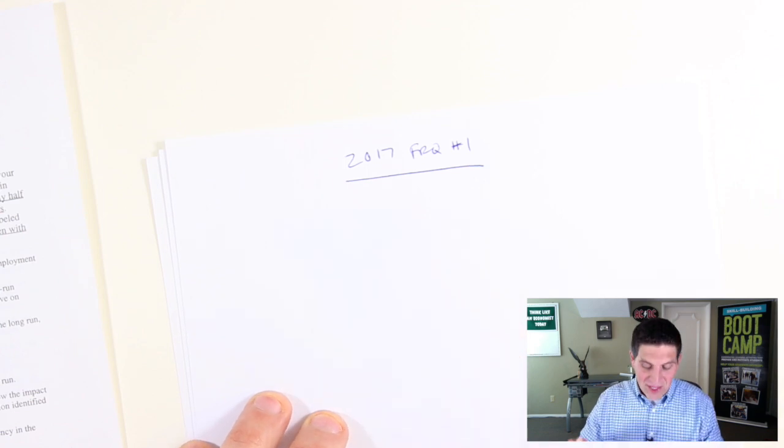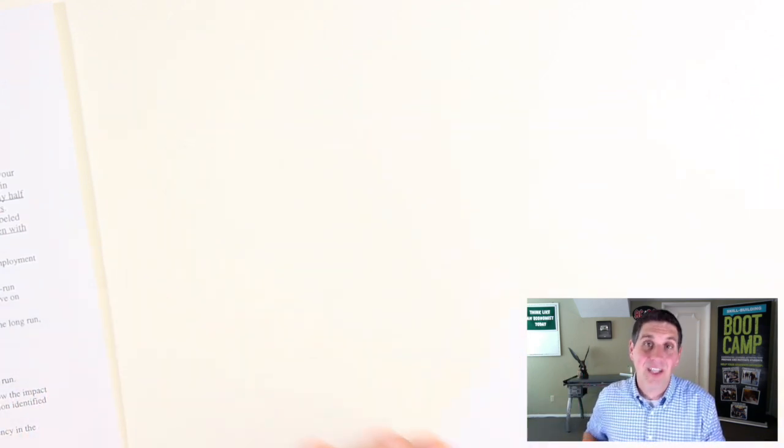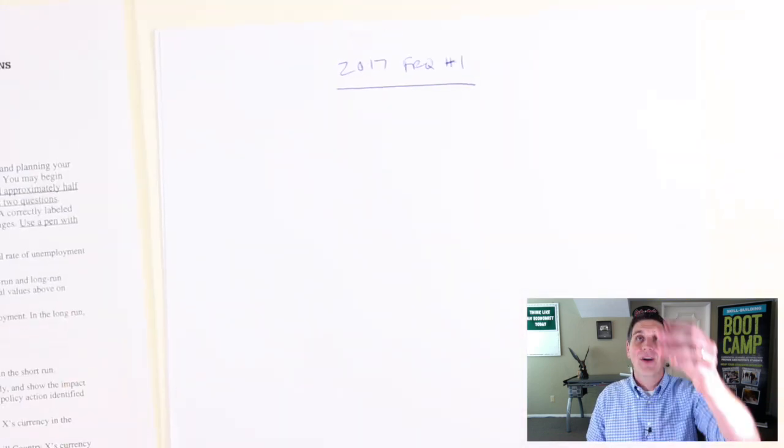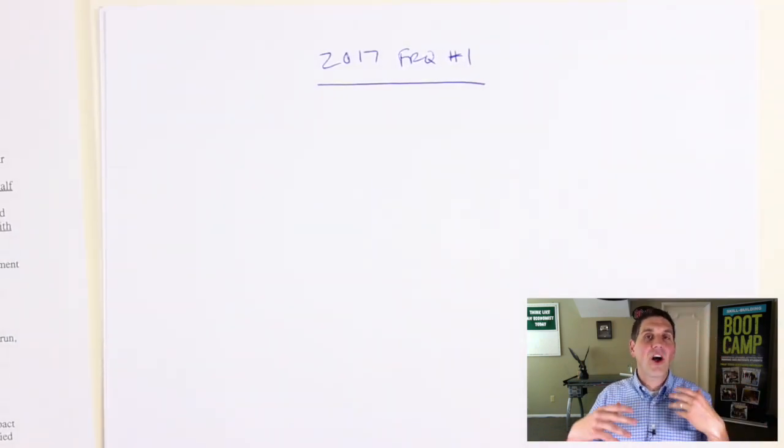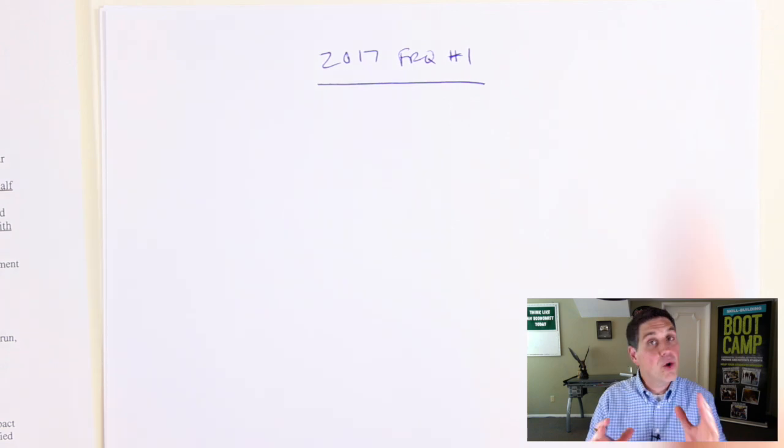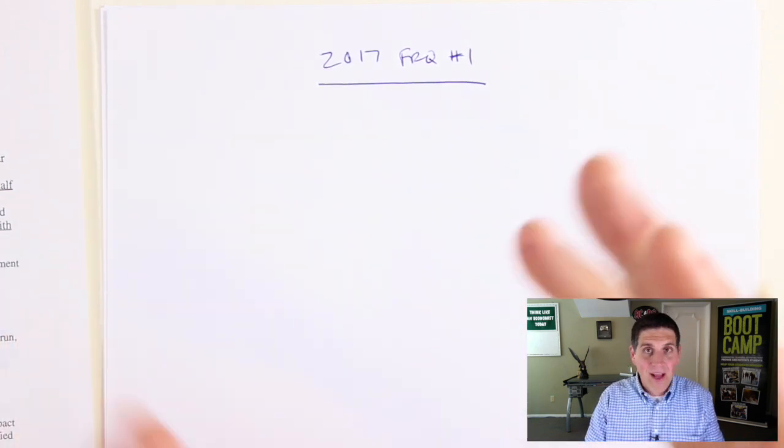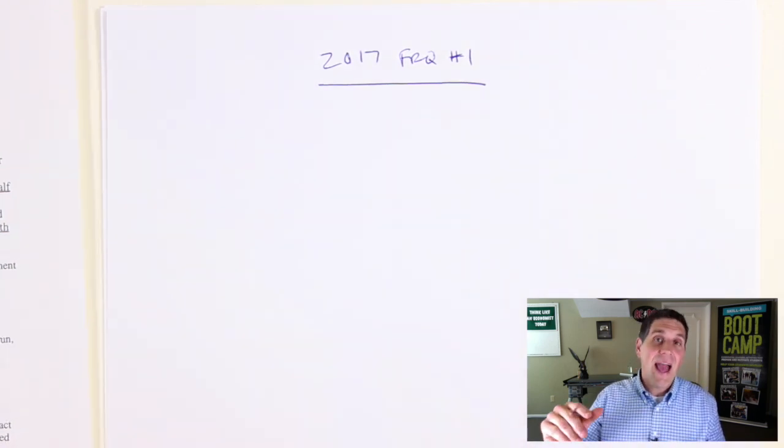So this is the first free response. This is the first response students were given this year. And you know what? It was an easy one. I hope you thought it was easy. And I hope you felt like this is something that you could handle. But it was a relatively easy question. It started off like all free responses start off by asking you to draw a key graph. Now usually on the AP test, they ask you about aggregate demand or aggregate supply and drawing that graph, recessionary gap, inflationary gap. But this time they did something slightly different. They asked you to draw the Phillips curve.